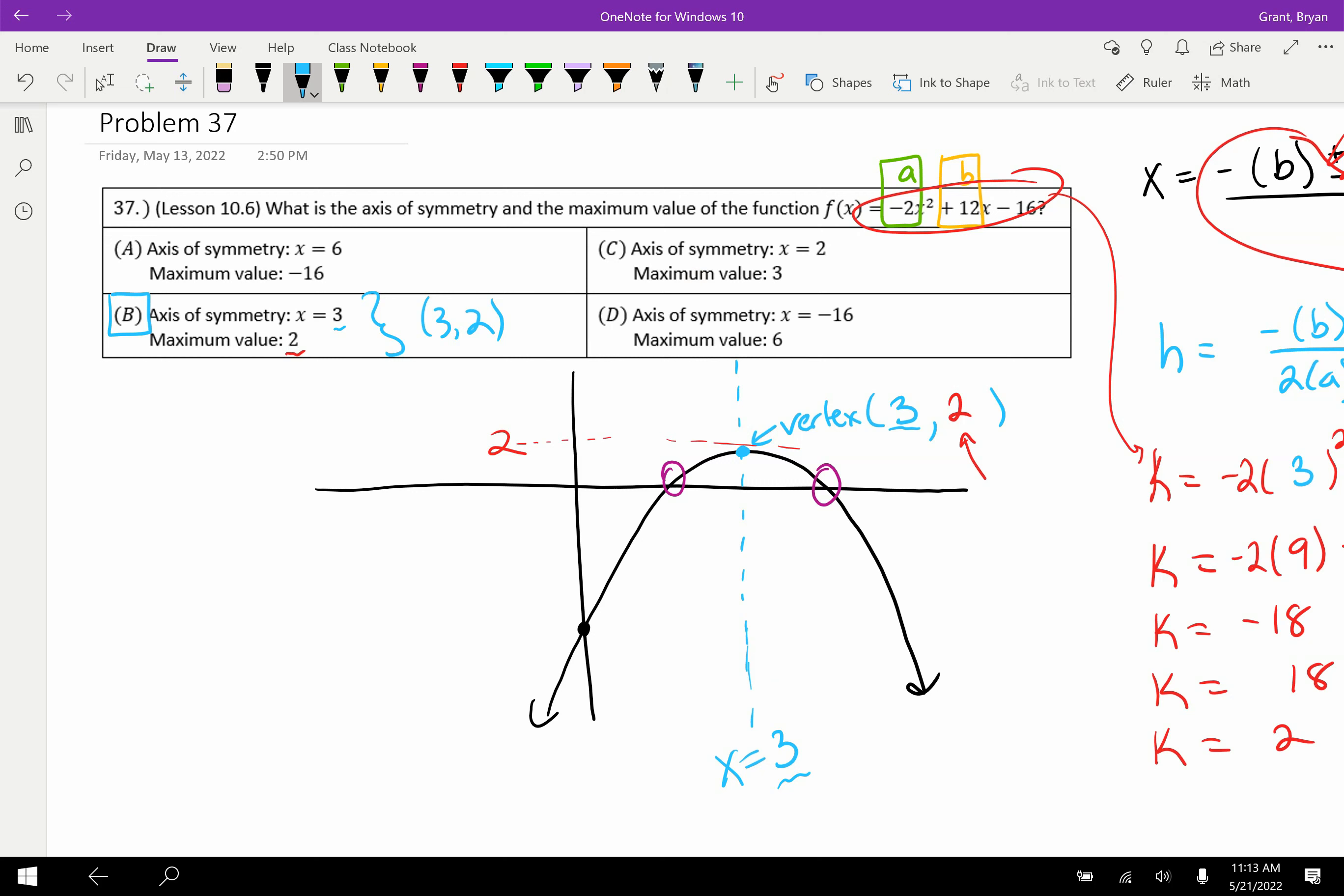Notice they would have asked you for a minimum value if this had been a positive out front, because then our parabola would have looked like this, and there would have been a minimum instead of a maximum. But the process is the same. You're really just finding the vertex. Hopefully this did a nice job explaining both the axis of symmetry and the maximum value. As always, for more information, you can go back to 10.6. And I'm excited to continue to help you succeed on your final exam for semester 2.